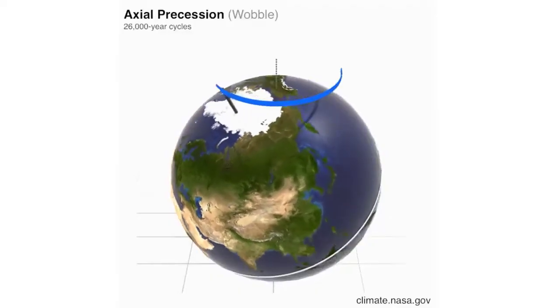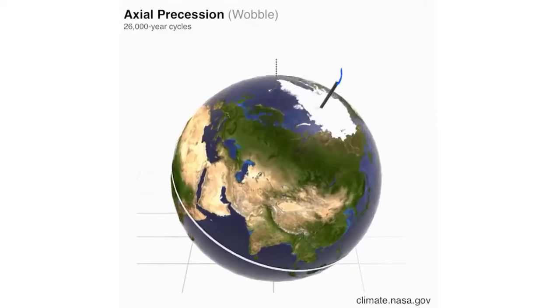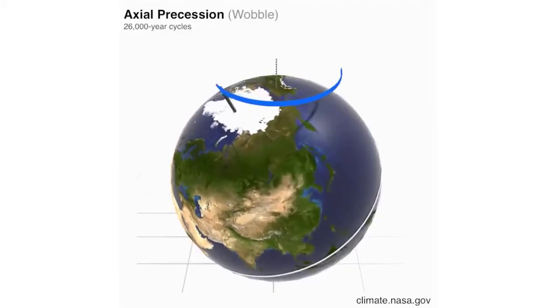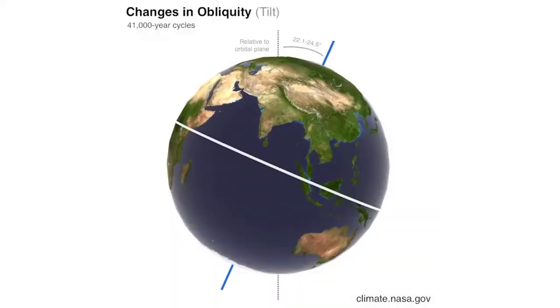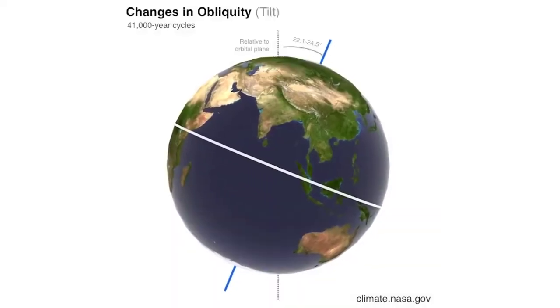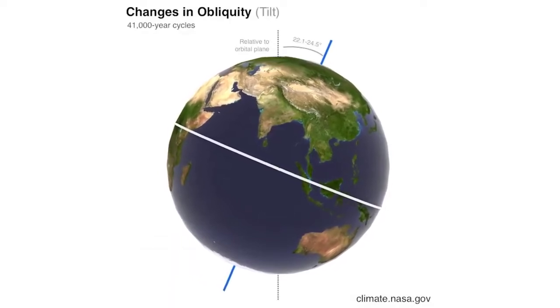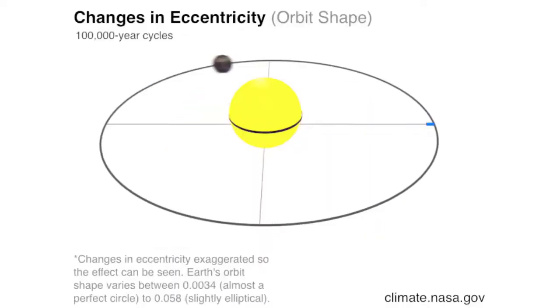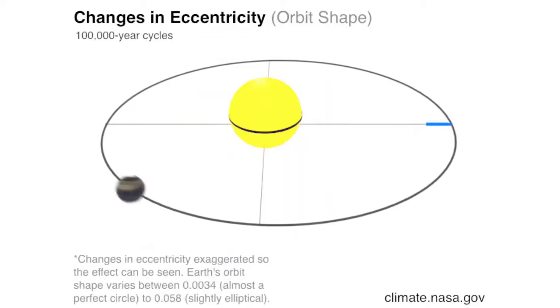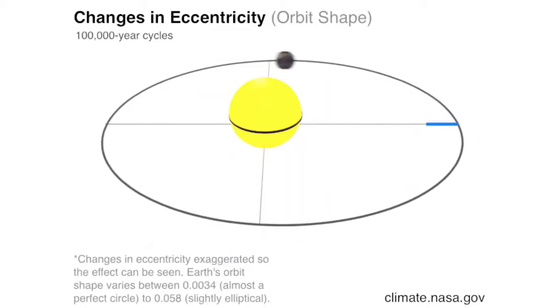He identified orbital cycles that show what happens with the Earth's tilt and how it wobbles like a top — that's called precession, and that's a 20,000-year cycle. How much it leans on its axis is a 40,000-year cycle called obliquity. Eccentricity is how circular Earth's orbit is, going from a circle to an ellipse — roughly a 100,000-year cycle.